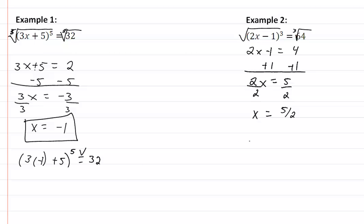Again, we want to plug that in, so we have 2 times 5 halves minus 1 to the third power equal to 64. Well, 2 times 5 halves is 5, 5 minus 1 is 4, and 4 to the third power is 64. It checks, and there's our answer.